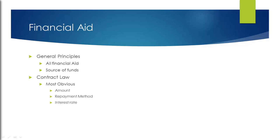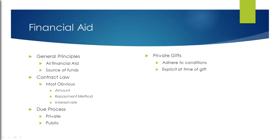Financial aid is the biggest way that institutions uphold due process and follow the federal government's regulations in terms of the constitution, statutes, and the like. This is how both private and public institutions are required to follow the due process clause.